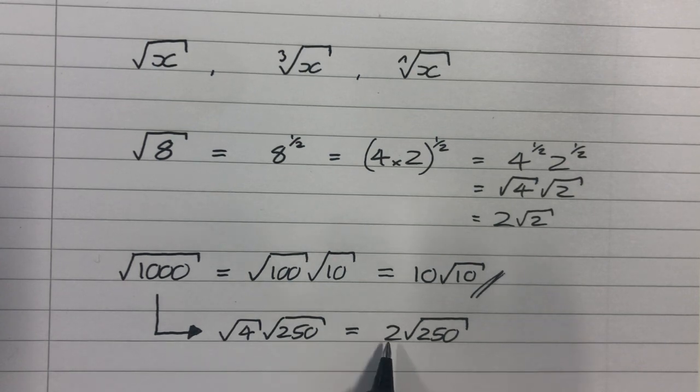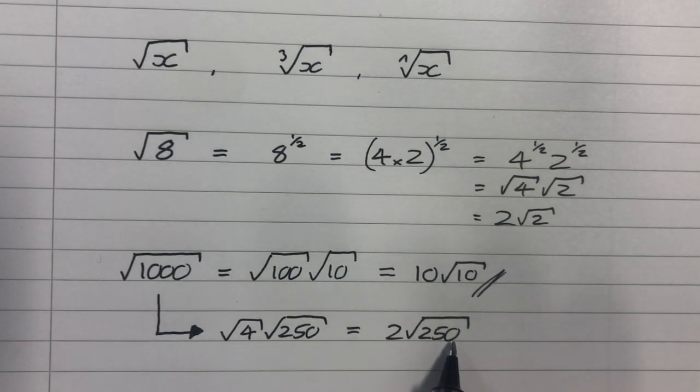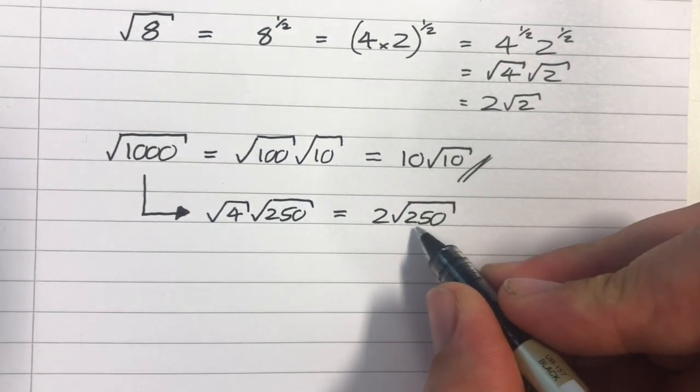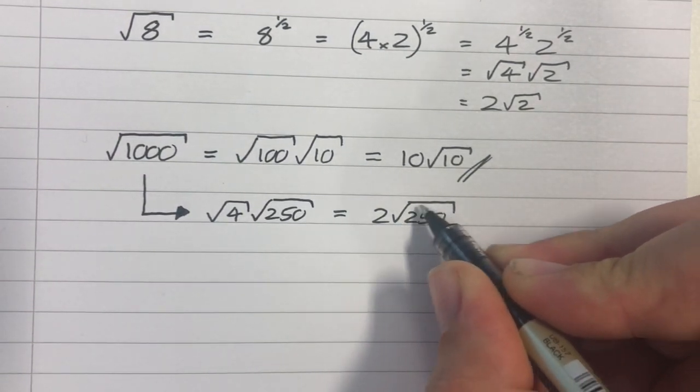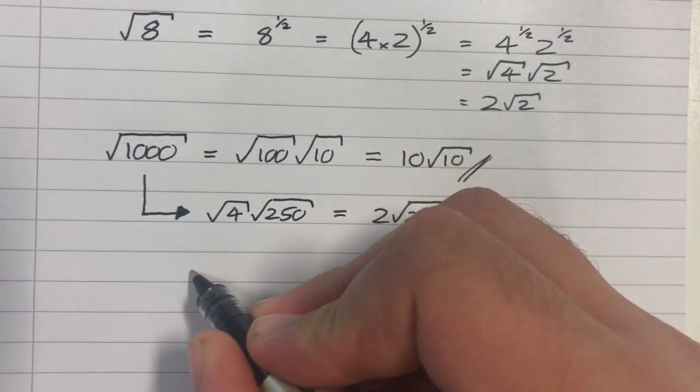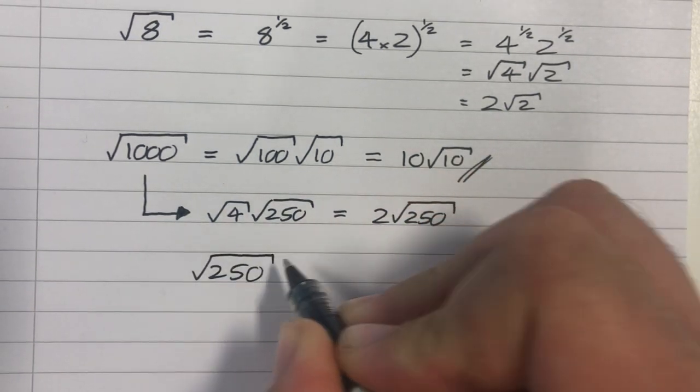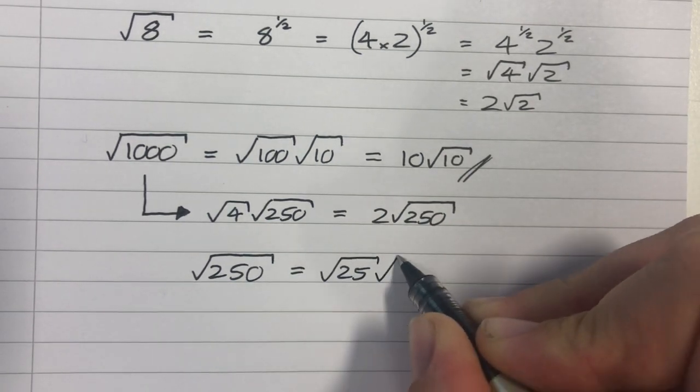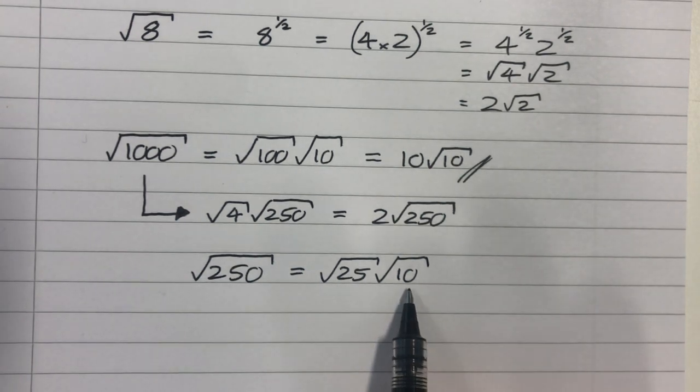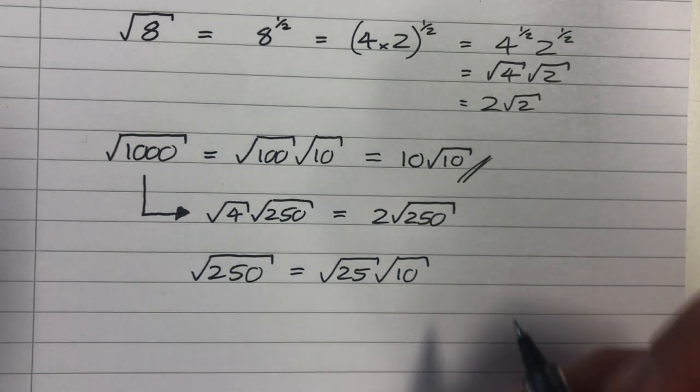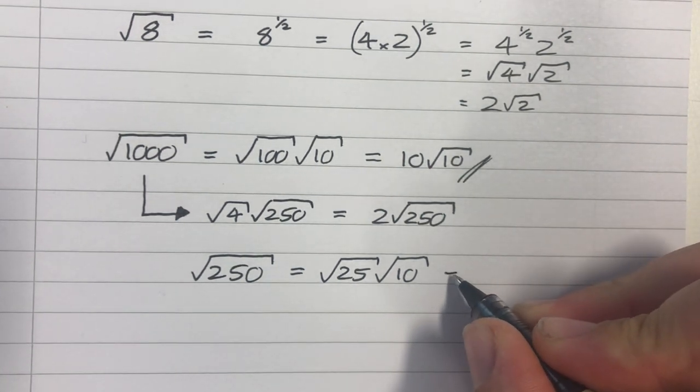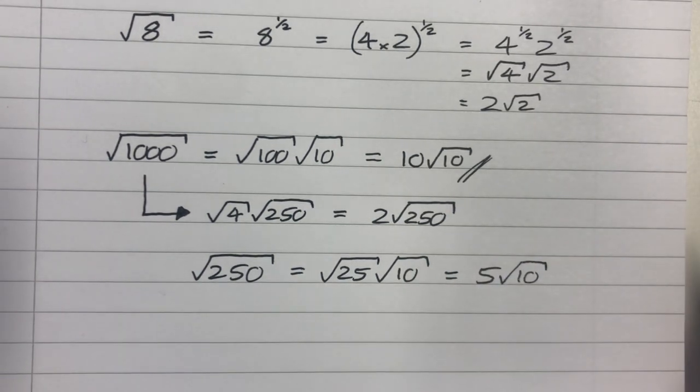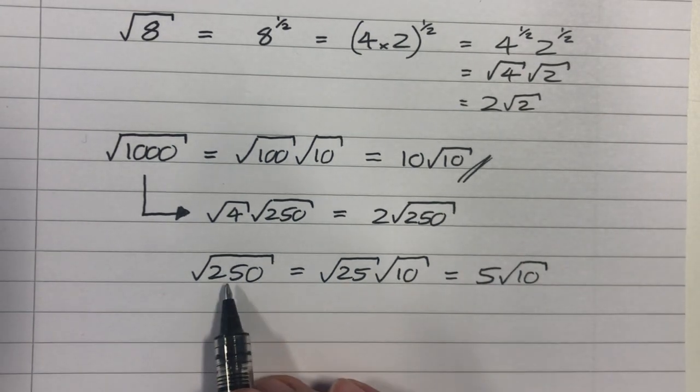There's nothing wrong with what I've done here. I've taken a 4 out, and that leaves 250. Square root of them both, and then square root of the 4, that gives me the 2. That is correct. However, this is not in its most simplified state yet, because square root 250 can be simplified. So I can say, well, the square root of 250, that's equal to the square root of 25 times the square root of 10, because 25 times 10 is 250. And 25 is a square number. So when I square root it, I'll get 5.